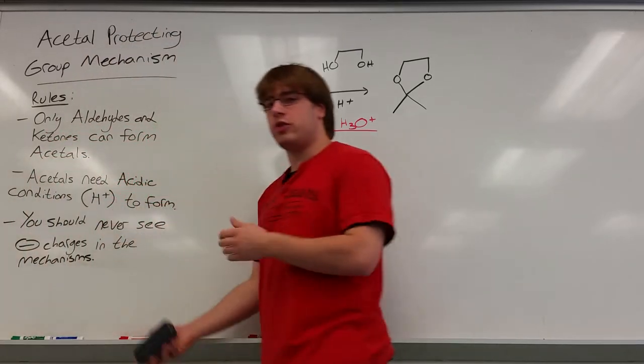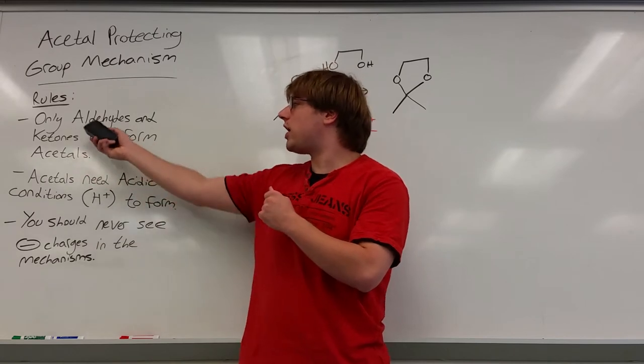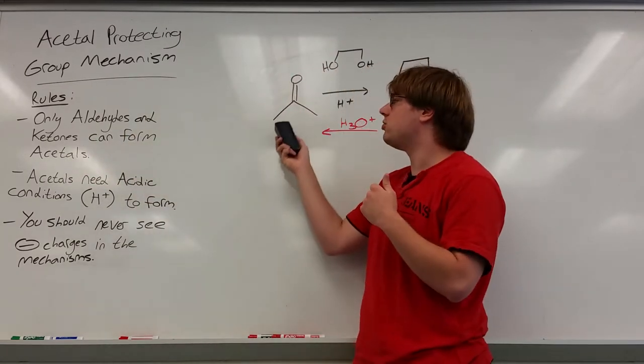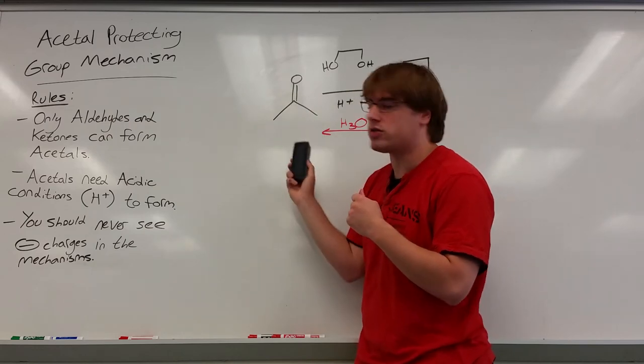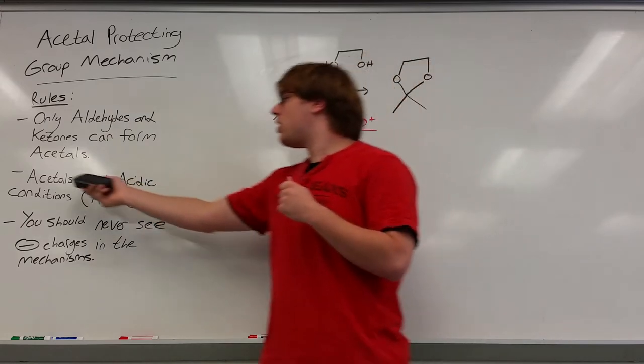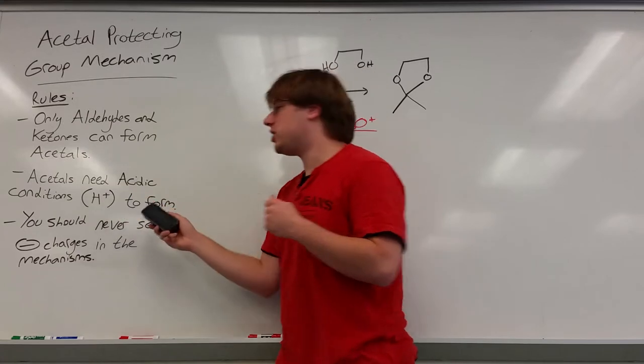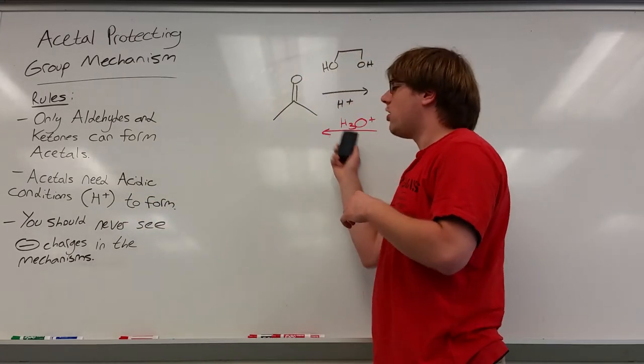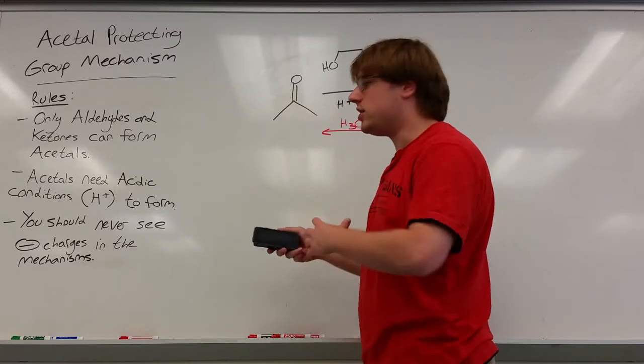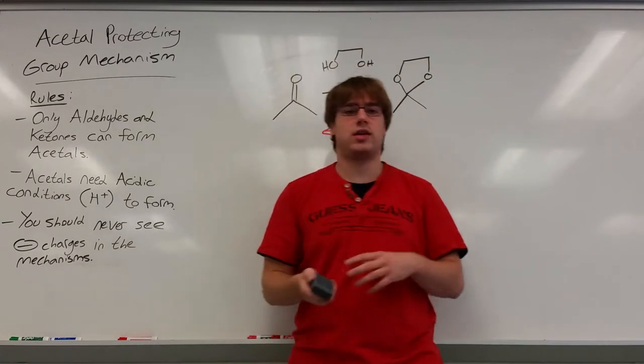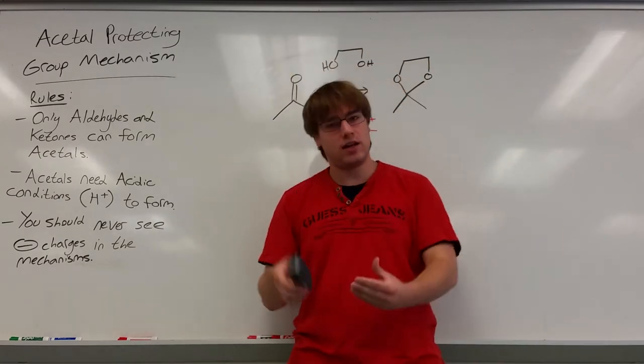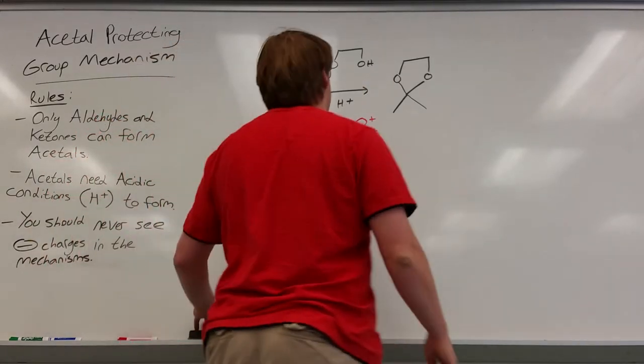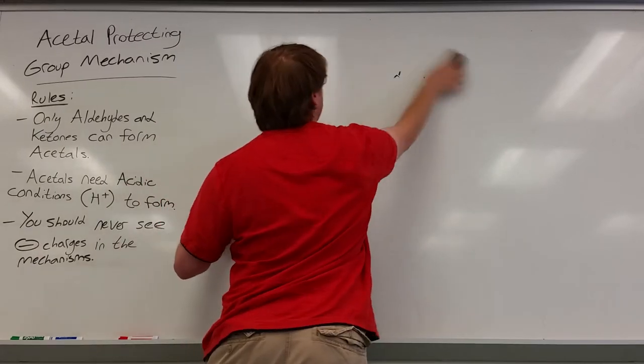Now, of course, we still have the same rules as every other acetal. You can only make it with aldehydes and ketones, which means double bond O's that have only carbons and hydrogens connected to them. The acetal must be formed in H+, in acidic conditions, so that's why it's always H+ or H3O positive to break or make these. And because we're in acidic conditions, we should never see any negative charges when we draw out the whole mechanism. With that said, let's look at the forward and backward mechanism. Let's do forward first.